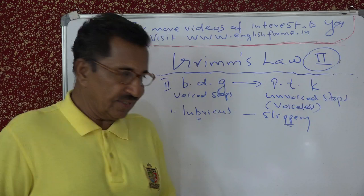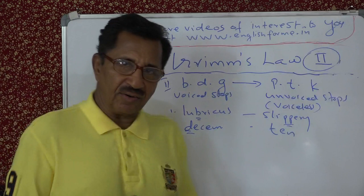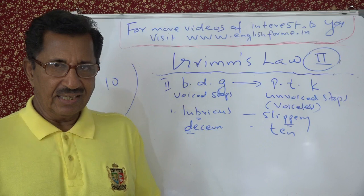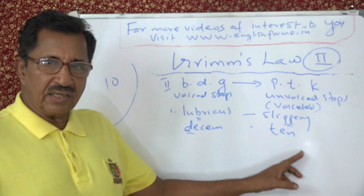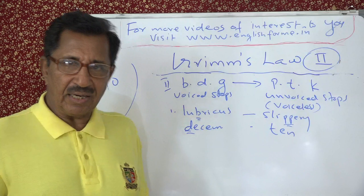The next example is Latin 'decem', and you have English 'ten'. 'Decem' means ten — hence 'decade'. The International Decade of Women was declared by the UN from 1976 to 1985 — a period of ten years. Instead of 'D' in Latin, you have 'T' in English. Latin and Sanskrit are non-Germanic languages, while English belongs to Germanic.